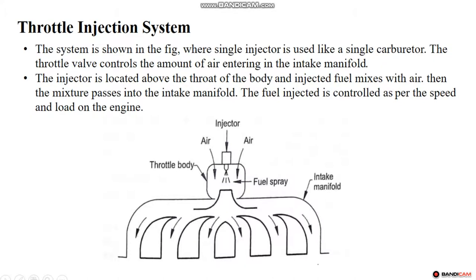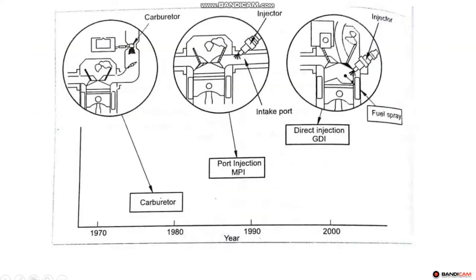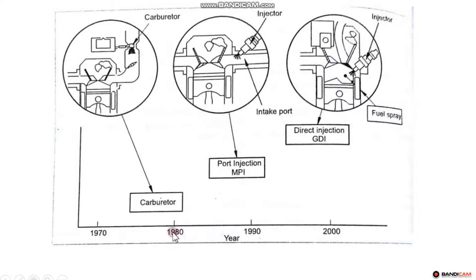Next, let's talk about the latest technology in injection systems — it is called CRDI. This is the evolution of fuel injection. In the 1970s and 1980s, the carburetor was used — it is a device that mixes the fuel-air mixture. Then in the 1980s, we moved to a multi-point port injection system.